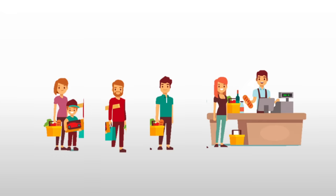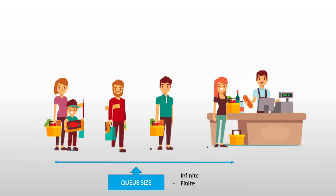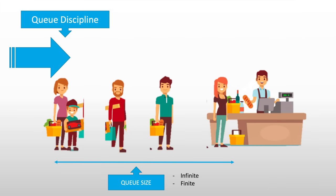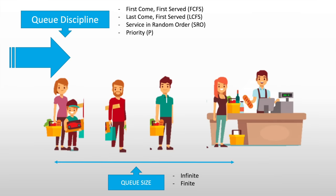Now, let's try zooming in to just one line. The queue size is the number of people that one queue can hold. It can either be finite or infinite. These customers would have different discipline, or the queue would have different discipline on how people arrive. It would either be first-come first-served, last-come last-served, last-come first-served, service in random order, or priority.